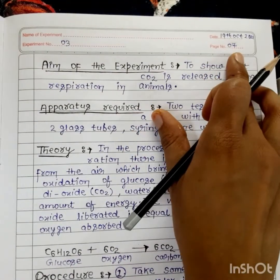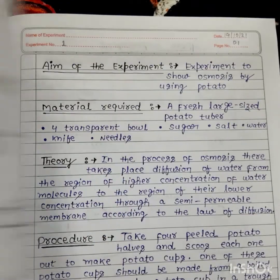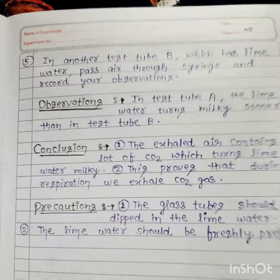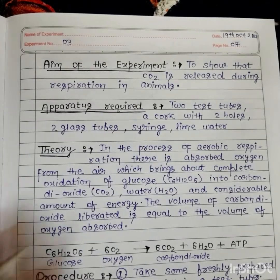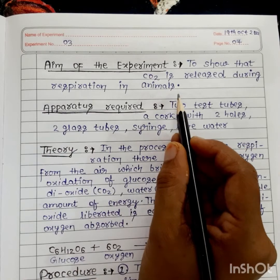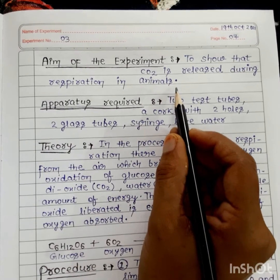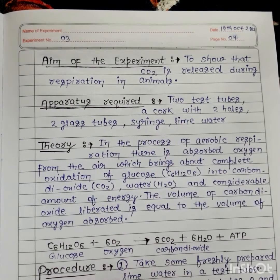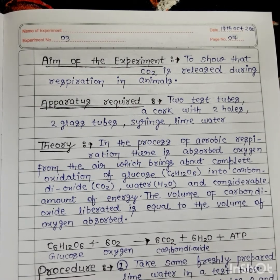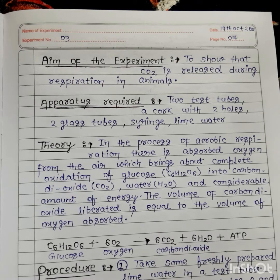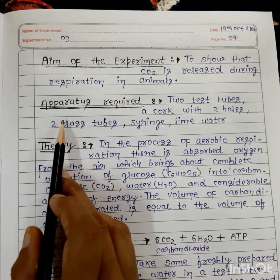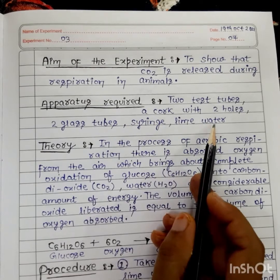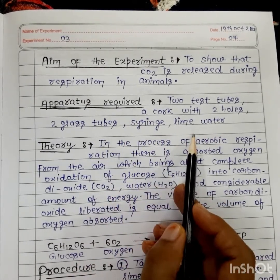The third experiment is: to show that CO2 is released during respiration in animals. We know that animals take in oxygen and expel CO2. The apparatus required are: two test tubes, a cork with two holes, two glass tubes, a syringe, and lime water.